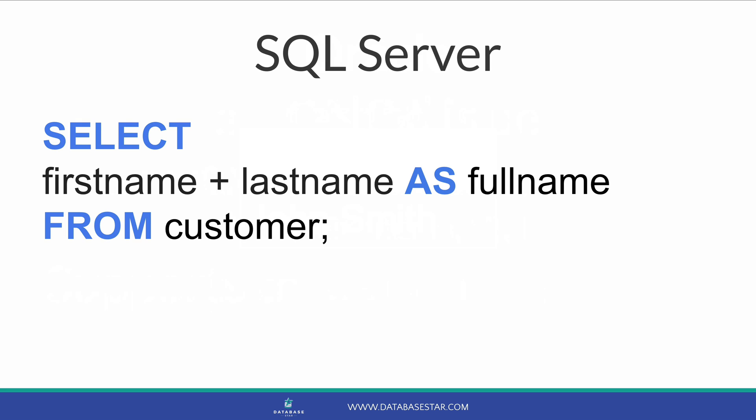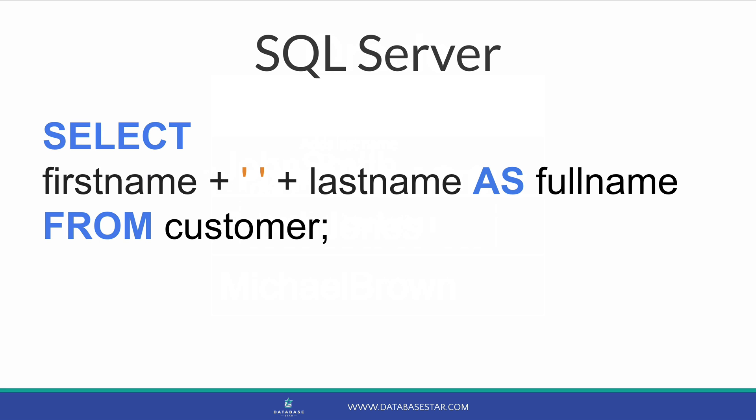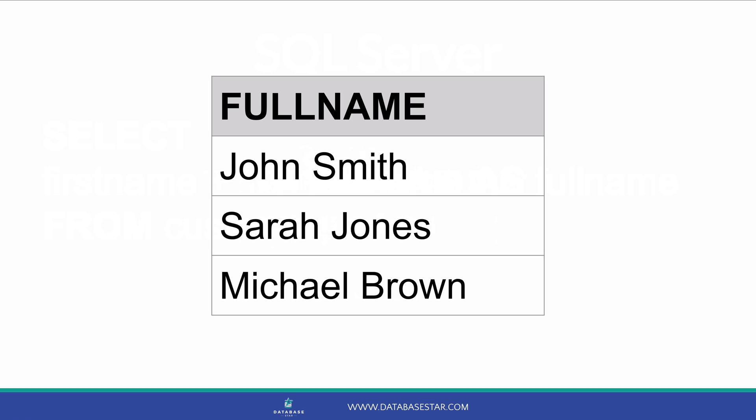We can use the plus symbol on columns in a table as well. For example, we can select the first name and last name columns with a plus to concatenate them. The result shows the first name and last name values combined, but there is no space in the middle. We can add a space by adding a plus, then a space, then another plus in between the first name and last name columns. When we run this query, the results now include a space between the names.